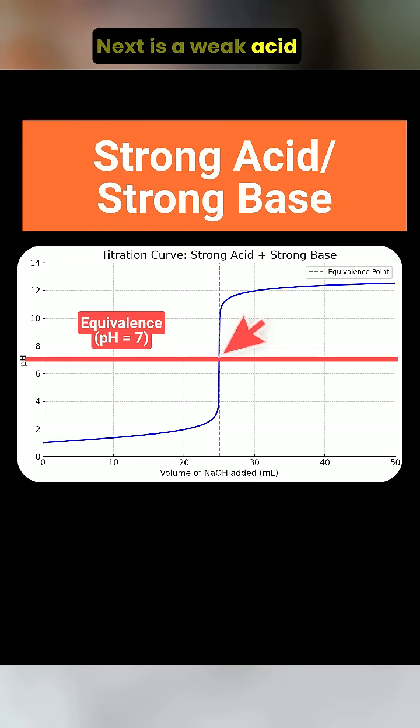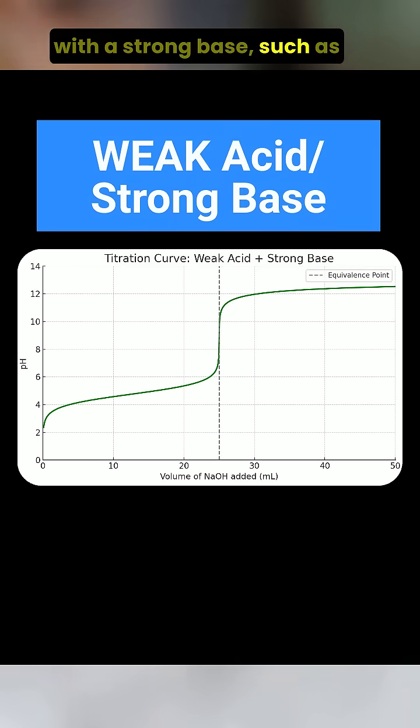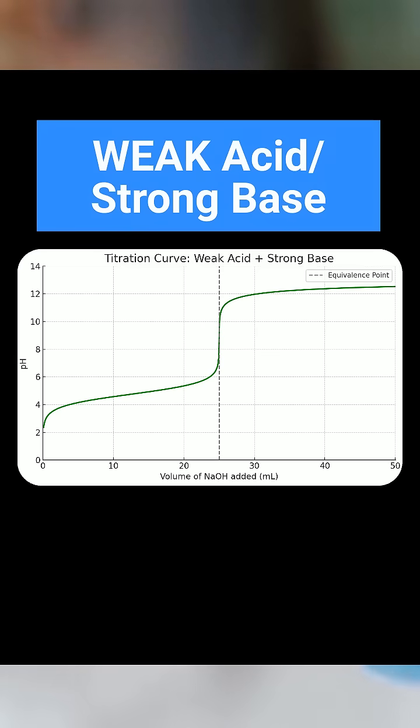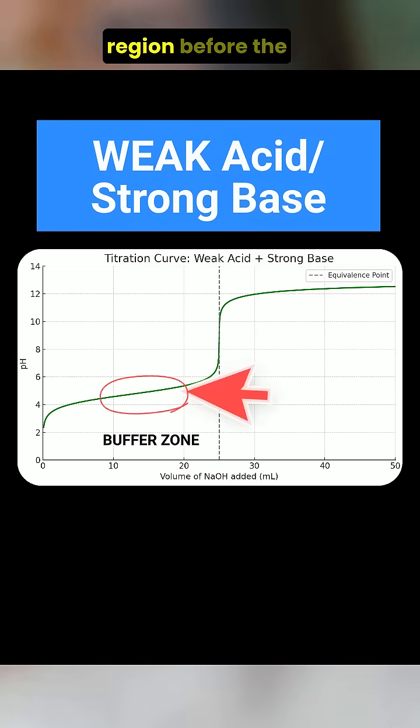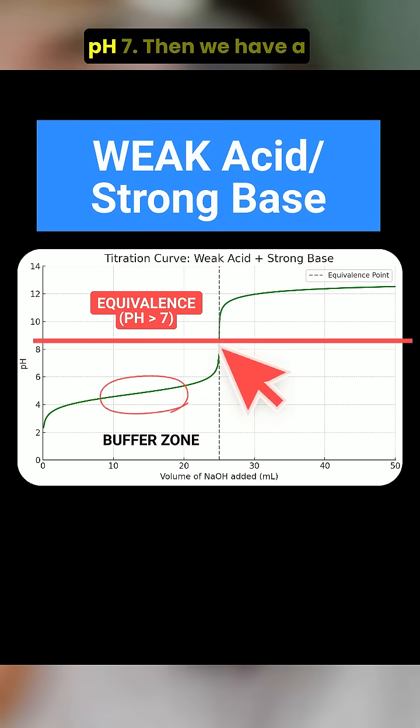Next is a weak acid with a strong base, such as acetic acid titrated with sodium hydroxide. This graph shows a buffer region before the equivalence point, and the equivalence point is above pH 7.